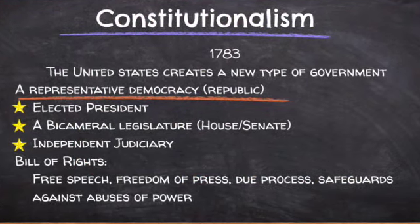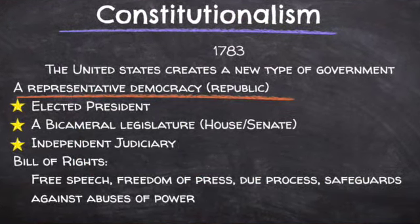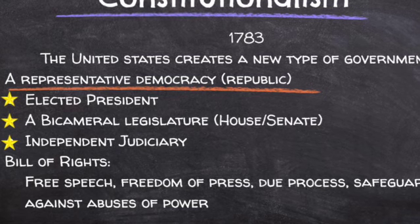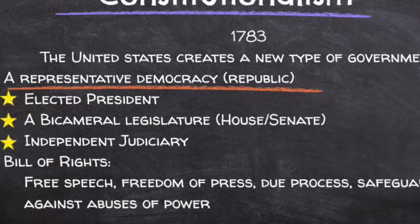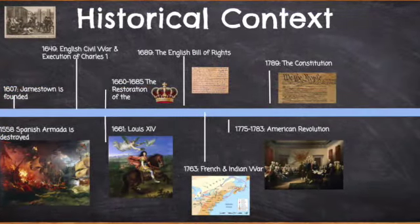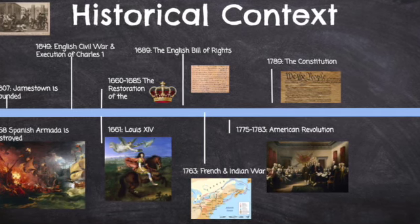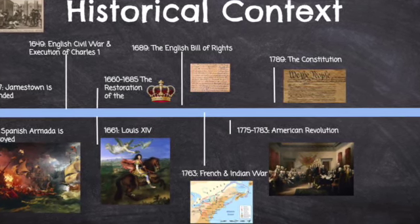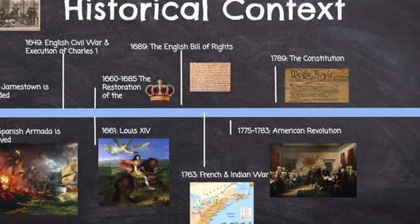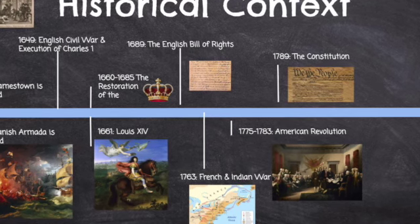Additionally, there is a Bill of Rights which guarantees citizens free speech, freedom of the press, freedom of religion, the ability of due process, and safeguards against governmental abuses of power. Rights for women, African Americans, and Native Americans were not secured, but the United States of America had begun.